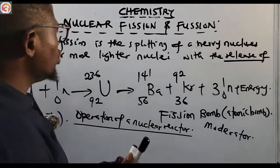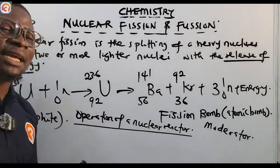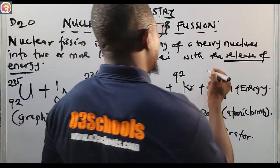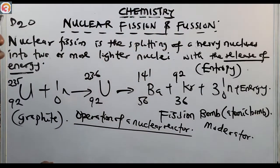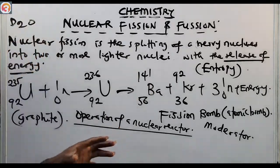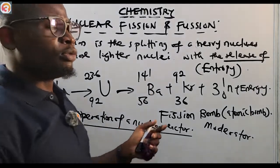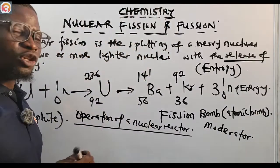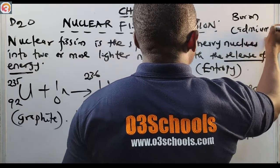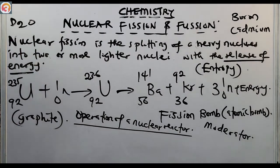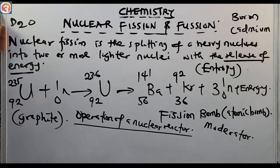When the entropy — the degree of randomness or disorderliness — due to these neutrons seems to be too high in a nuclear reactor, we need to add some control materials. Examples are boron and cadmium, which are added to absorb the excess neutrons. So moderators such as D2O and graphite slow down neutron speed, while boron and cadmium absorb excess neutrons.